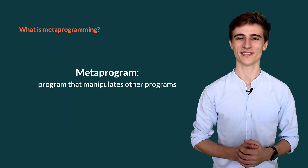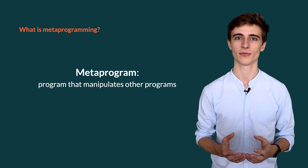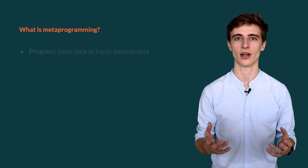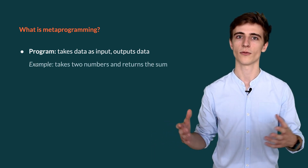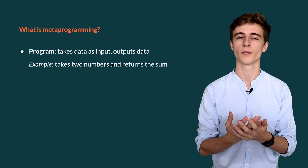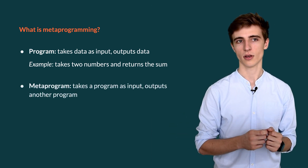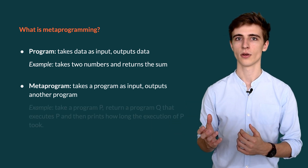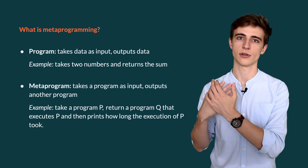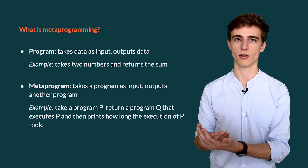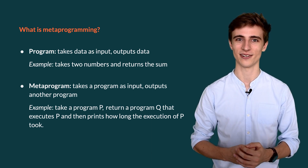But first let's answer the question: what is a metaprogram? A metaprogram is a program that manipulates other programs. So for instance if you're writing a regular program you might take some data as input and output some other data — for instance you take two numbers and compute the sum. When you're writing a metaprogram you take a program as input and you might output another program. An example is if you take a program p as input and output a program q that executes p and then prints how long it took to run p. And actually we'll be writing this program later in this video.